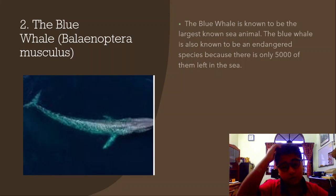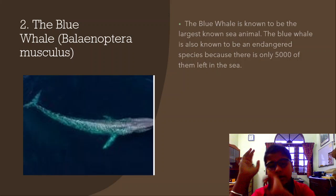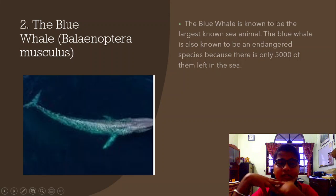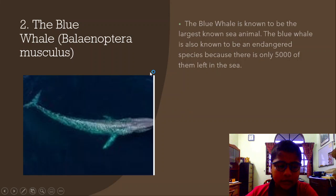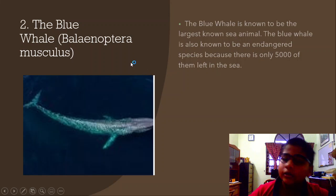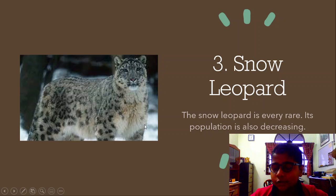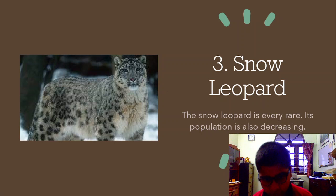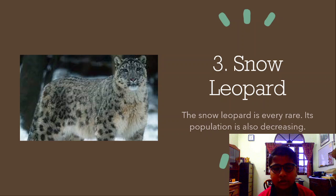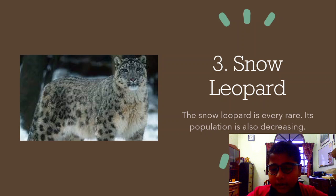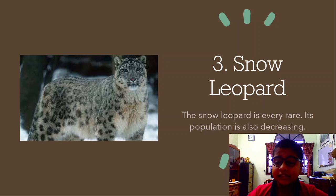The blue whale is an endangered species because there are only 5,000 left in the sea — there should be around 10,000 to 30,000. Number three is the snow leopard. The snow leopard lives in the snow, of course. It's a very rare species and its population is decreasing. I think it has something to do with their food chain going down, but I do hope it survives because it's a very rare and amazing species.